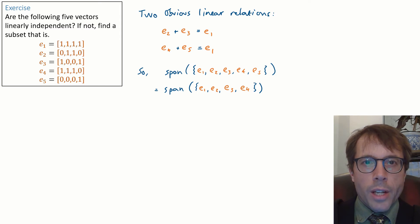Likewise we could write e3 as a linear combination of e1 and e2. So we don't lose anything from the span if we get rid of e3.